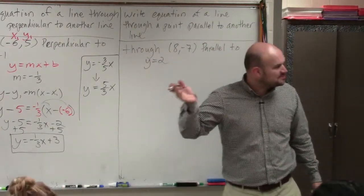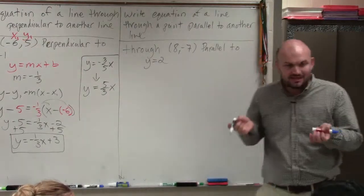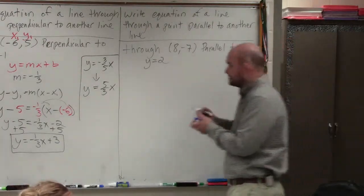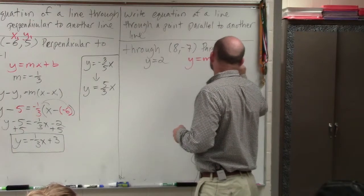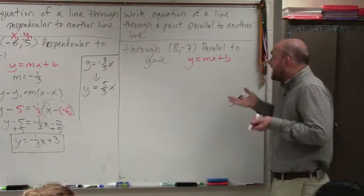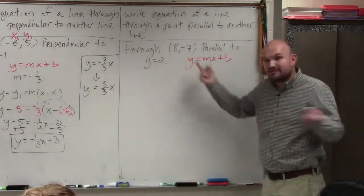And a lot of times, students will get confused on this problem because it's not technically in slope-intercept form. Remember, slope-intercept form looks like this: y equals mx plus b. We don't really have a slope. We just have a number 2.